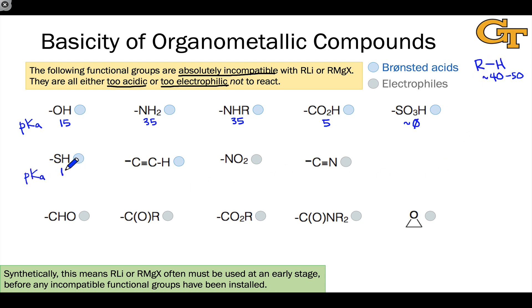SH is down at about 10. And even a terminal alkyne at 25 is incompatible with RLi or RMgX in a number of cases.